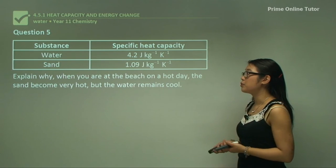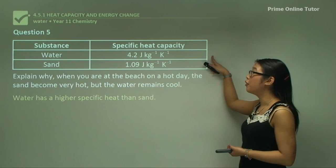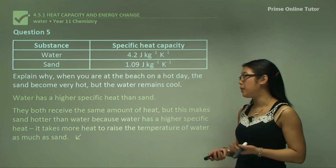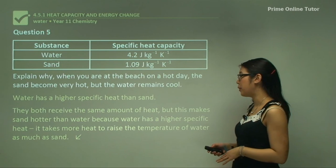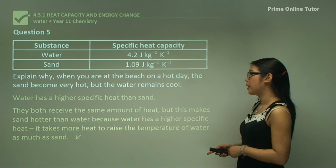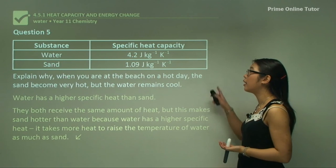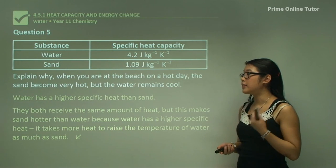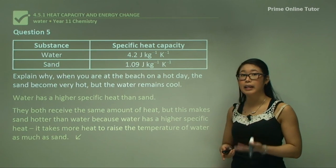Water has a higher specific heat capacity than sand, 4.2 compared to 1.09. They both receive the same amount of heat from the sun. But this makes the sand hotter than the water because water has a high specific heat capacity. It takes more heat, more energy from the sun, to heat a gram of water than to heat a gram of sand. The same amount of heat will heat the sand up very fast because it has a lower specific heat capacity.